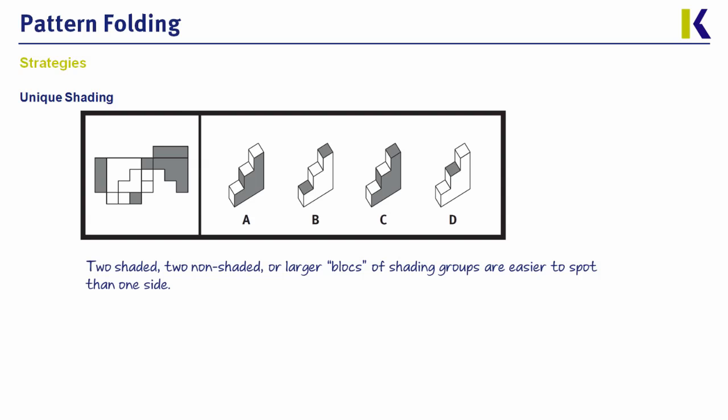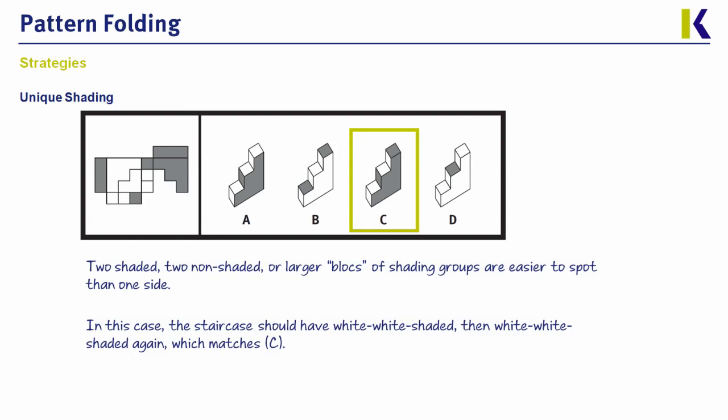So if you're looking at the answer choices, you can say, hmm, can I see one that has the shaded staircase and has a shaded top piece? And in fact, C does. Now, just because it has it doesn't mean the entire figure is right, though. So you would have to check everything else in terms of shading.